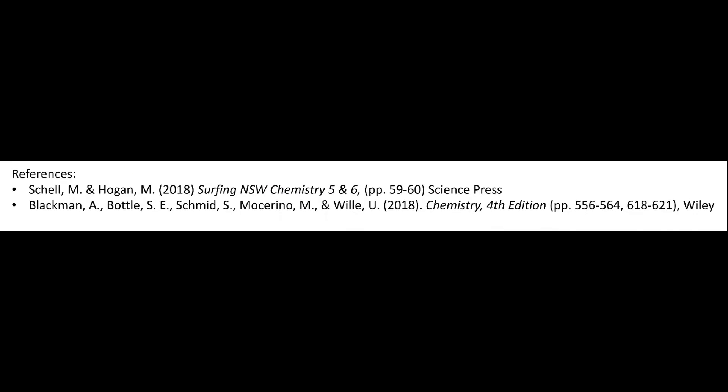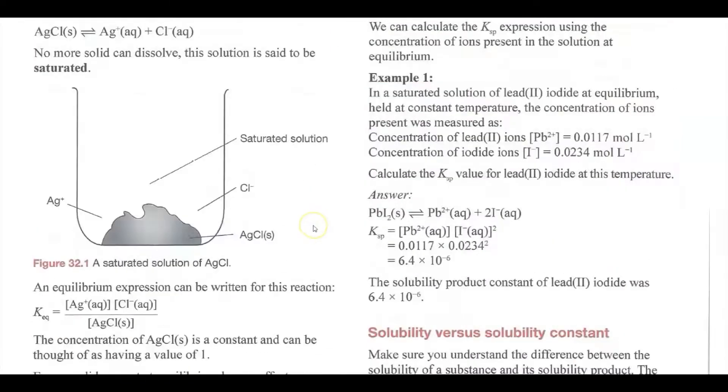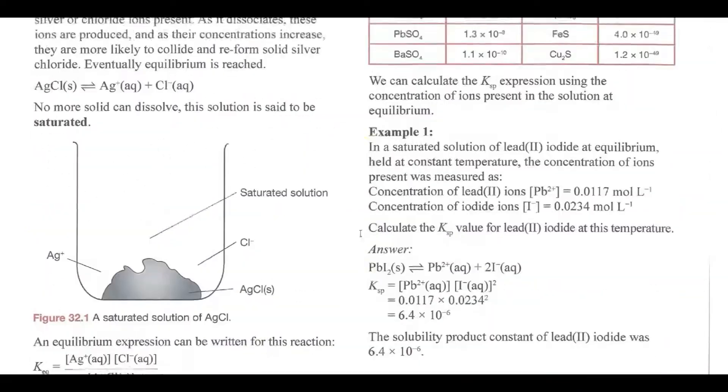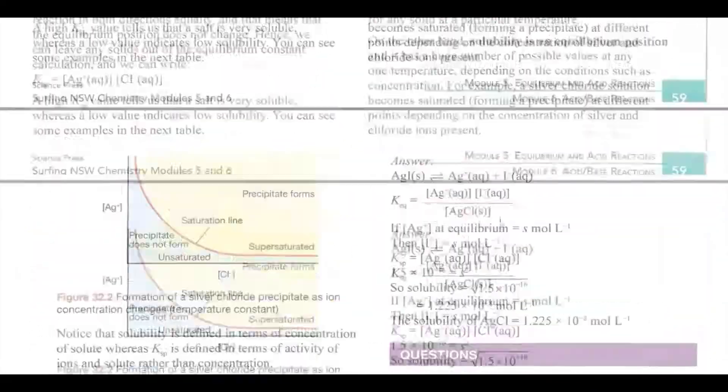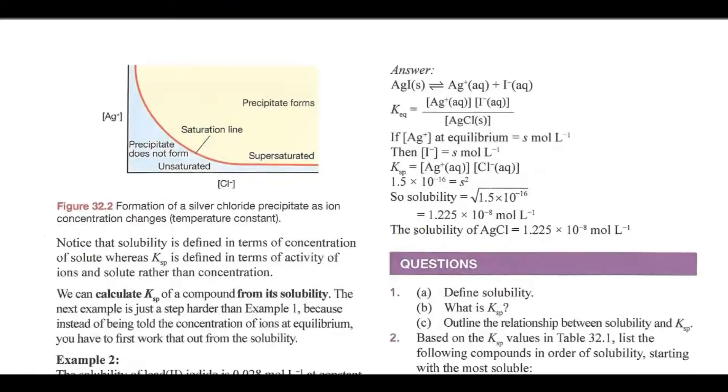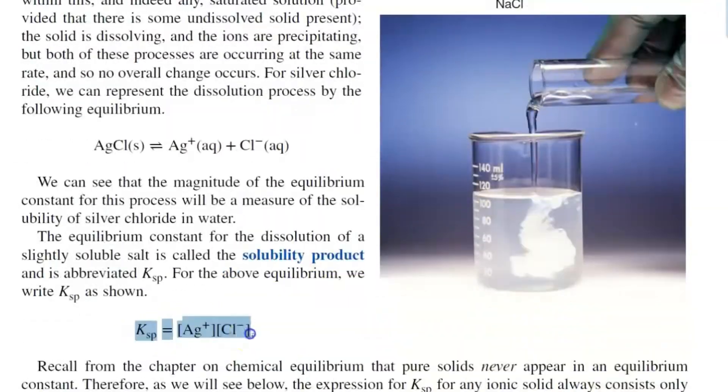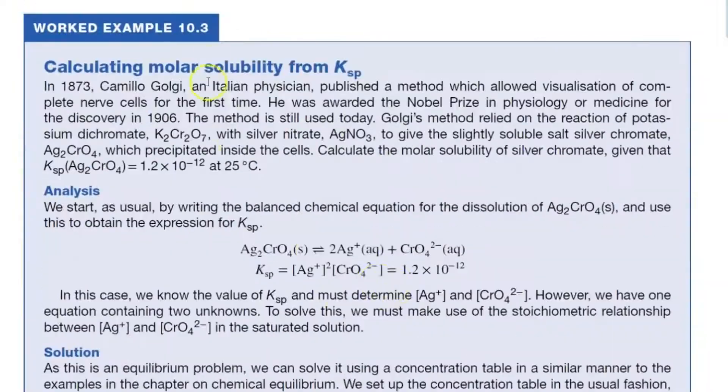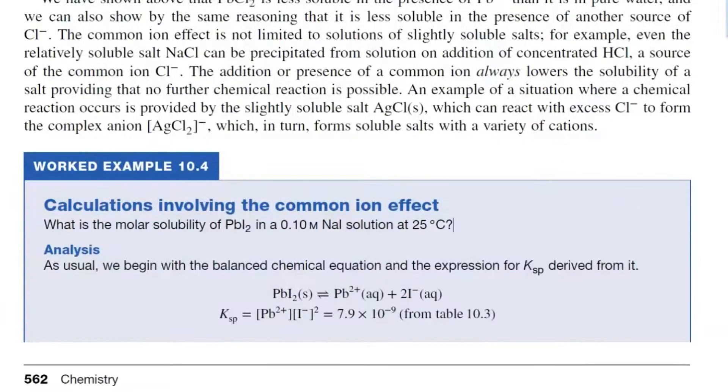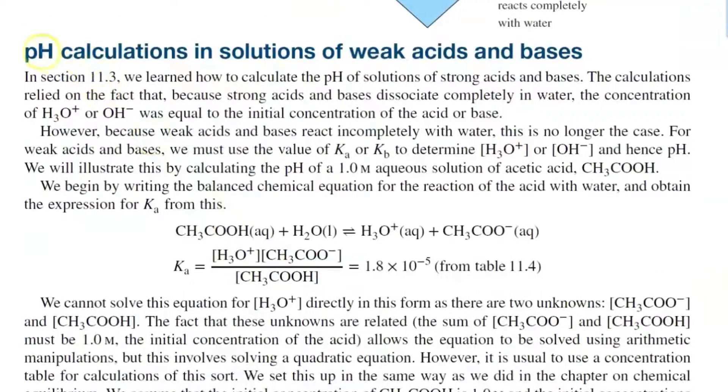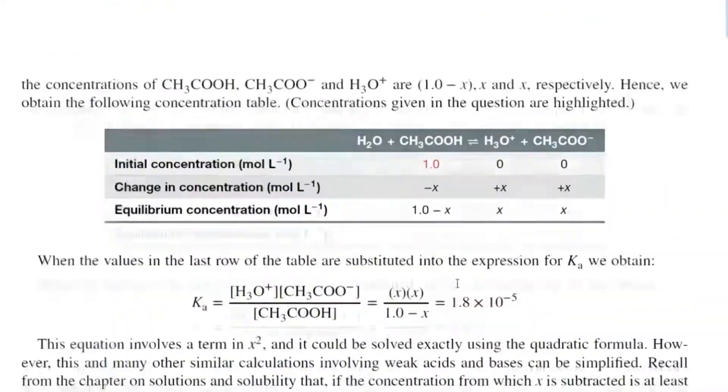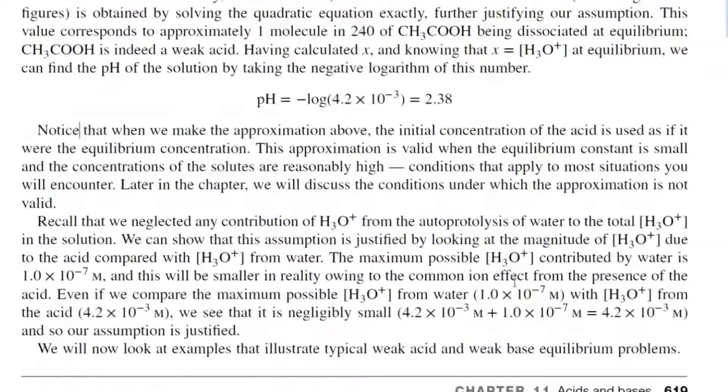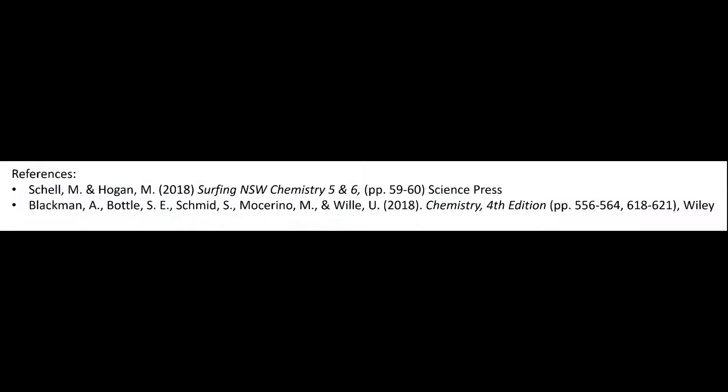For this video, the following references were used. Shell and Hogan have a great section on saturated solutions and Ksp, which includes a number of good examples of the types of questions you may see in the HSC exam. Blackman et al. goes into quite a bit of depth on the solubility product and also includes some good step-by-step examples of questions around this concept. There is also a good section on the calculation of pH in solutions of weak acids and bases, which is a little beyond the scope of this question, but a good extension of the kind of question we dealt with here. If you have any questions or comments, please leave them below. Thanks for watching and see you next time.